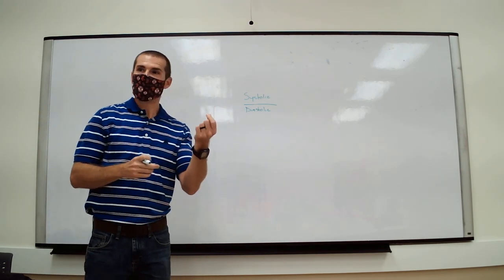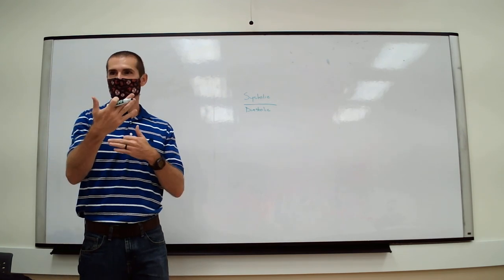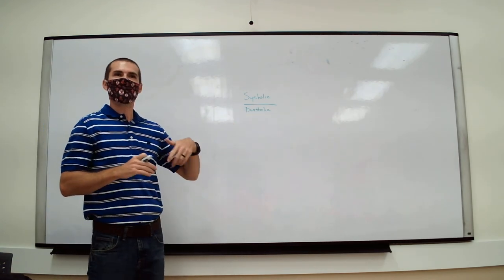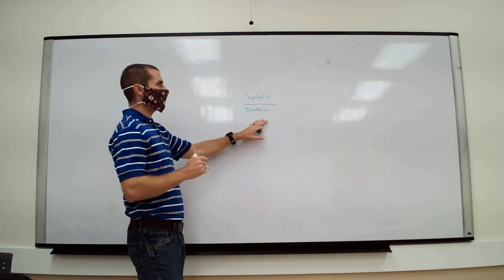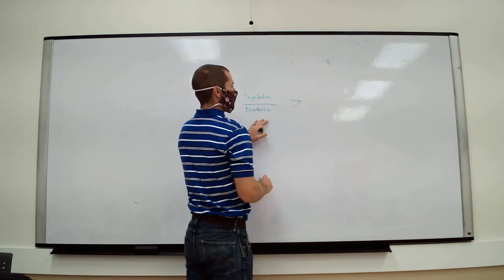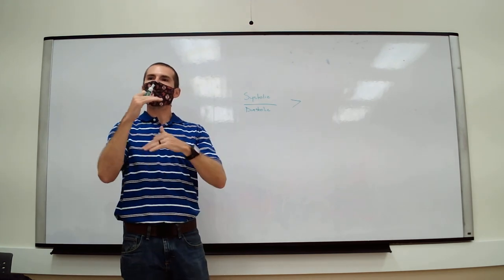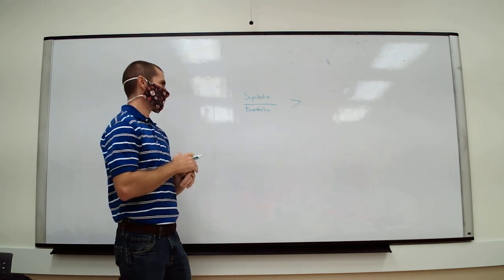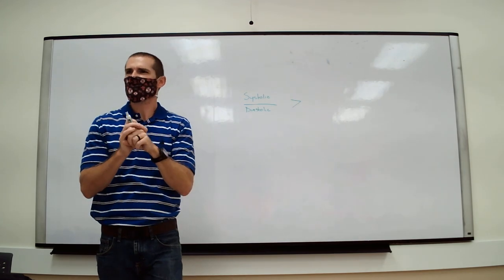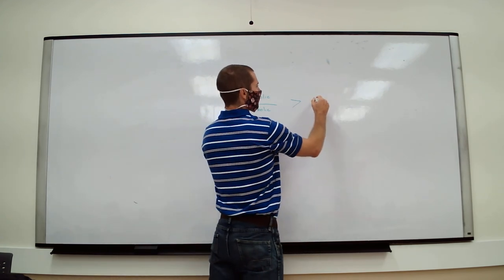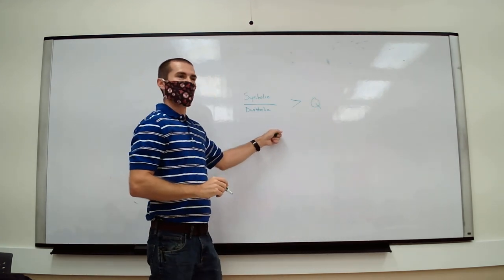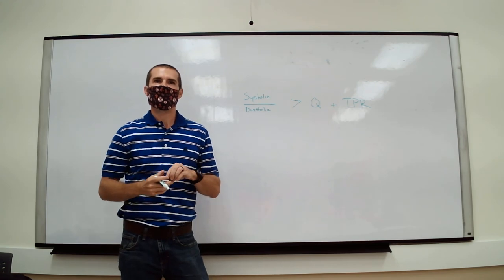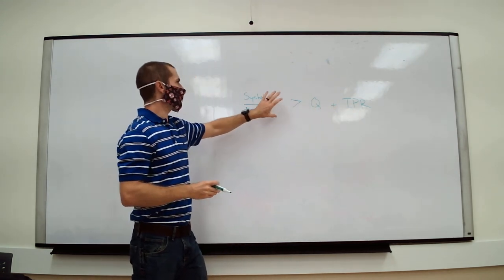Systole is ventricular contraction when blood is being ejected — the ventricles contract and blood is ejected to the rest of the body. Diastole is ventricular filling. Blood pressure is really dependent on two different things: cardiac output and total peripheral resistance. Any change in these factors will affect blood pressure.